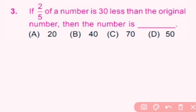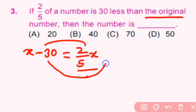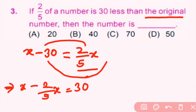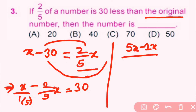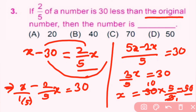Question number 3: if 2/5 of a number is 30 less than the original number, then the number is? Let the number be x. So (2/5)x is 30 less than x, meaning x minus 30 equals (2/5)x. Rearranging: x minus (2/5)x equals 30. Making denominators the same: (5x minus 2x)/5 equals 30, so 3x/5 equals 30. Thus x equals 30 times 5 by 3, which gives 50. Answer d is correct.